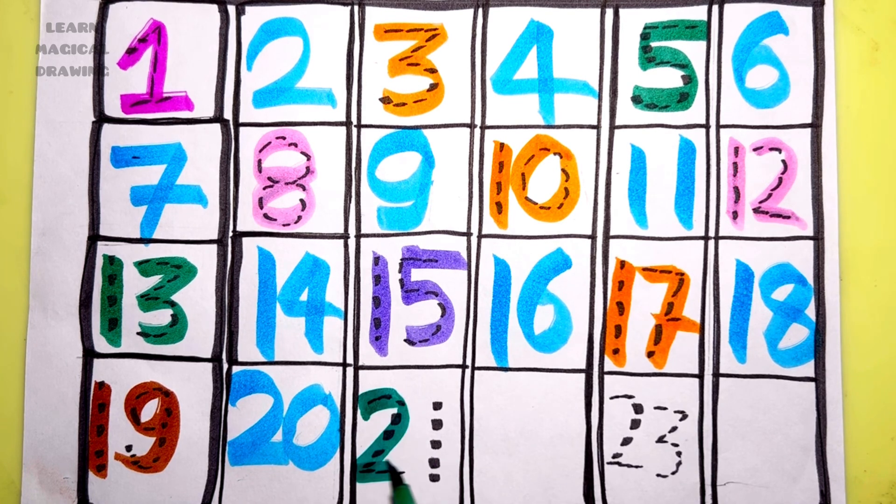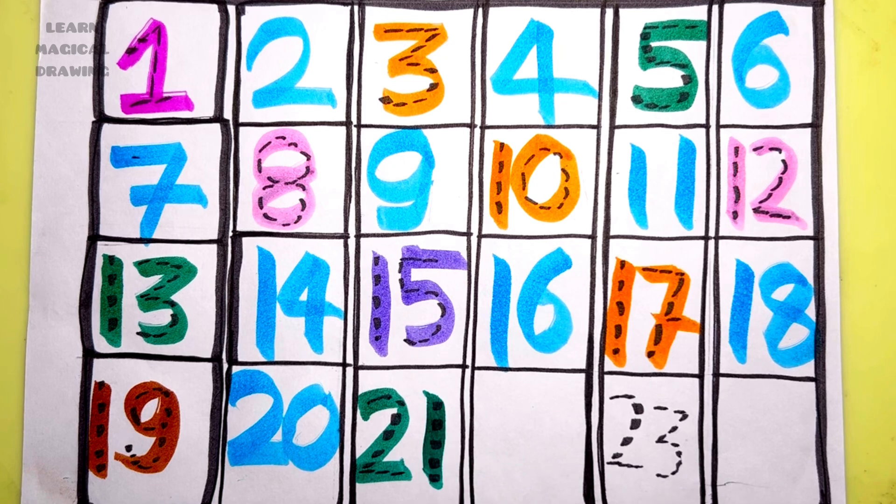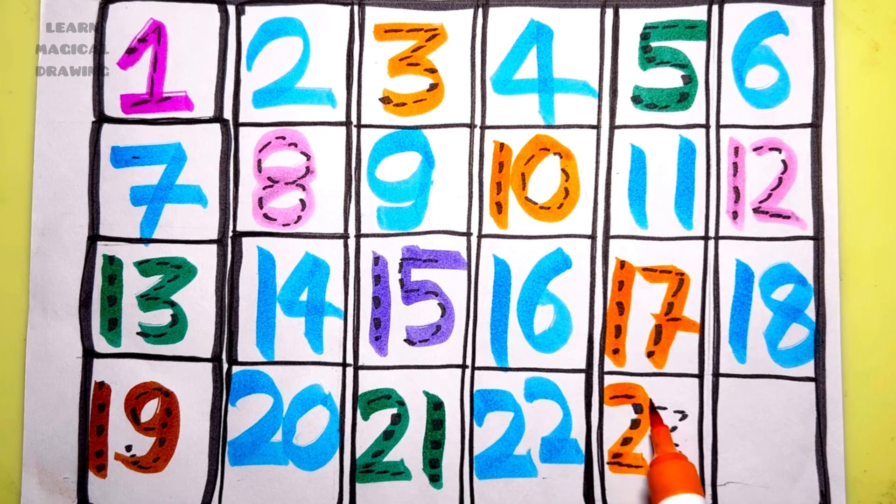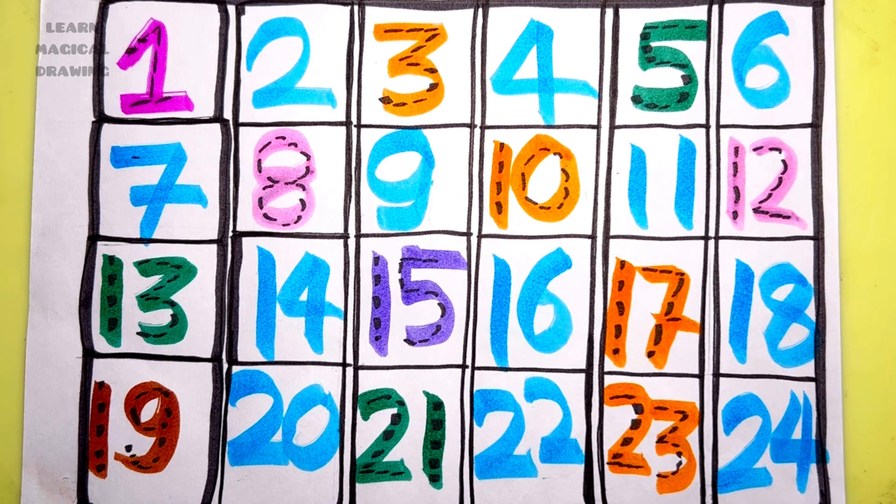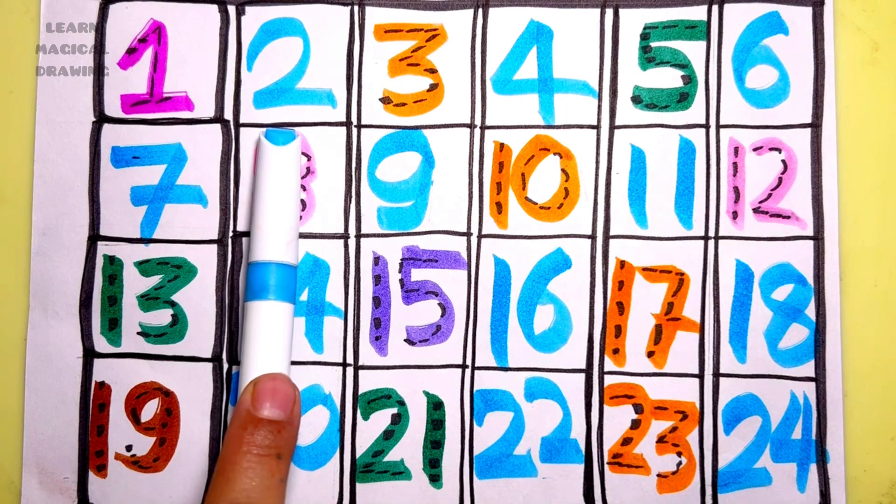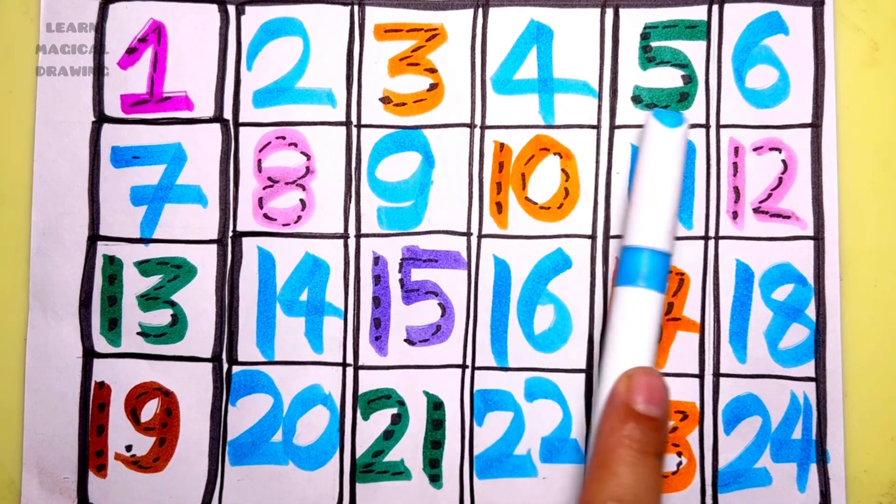Two one - twenty-one, two two - twenty-two, two three - twenty-three, two four - twenty-four. Let's read again: one, two, three, four, five, six, seven, eight, nine, ten.